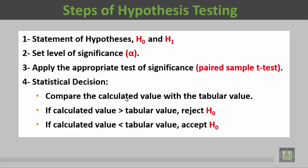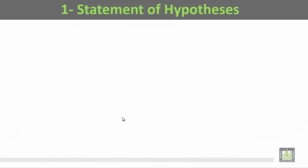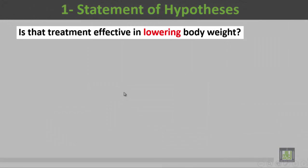If the calculated value is more than the tabular value, we are going to reject H-naught. If the calculated value is less than the tabular value, we are not going to reject H-naught. The first step is the statement of the hypotheses, which is based on the research question itself.